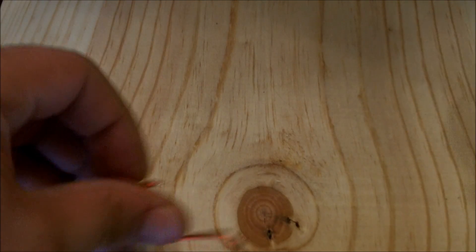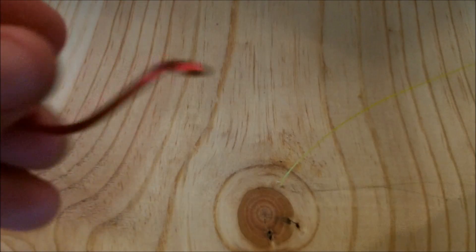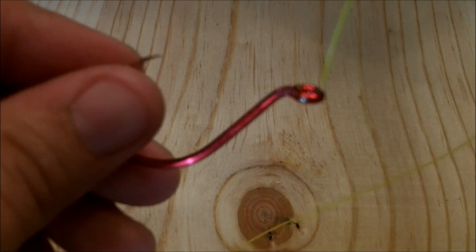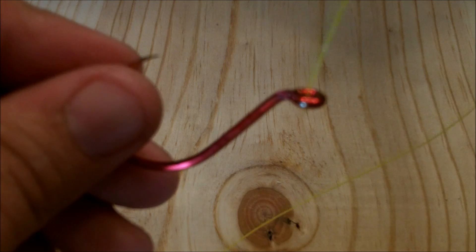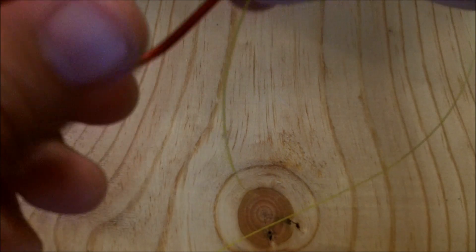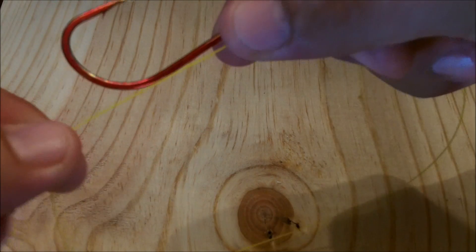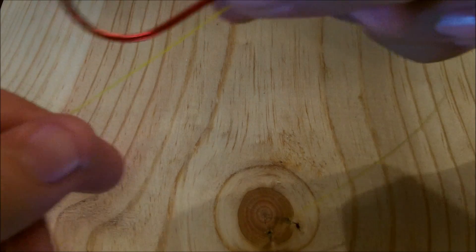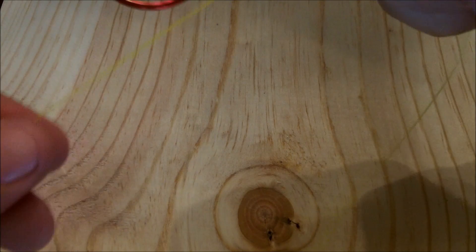So I'm going to show you how I do it. I'm going to take the hook, run the line through the eye. I'm going to pull a little bit extra, probably 3 to 4 inches past the hook.